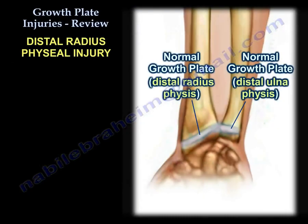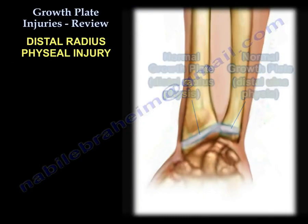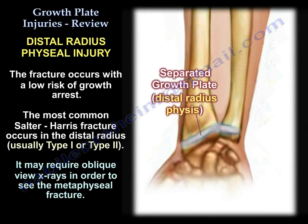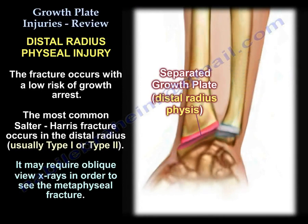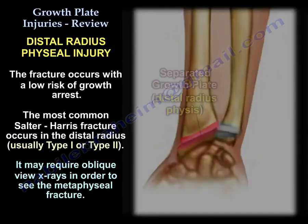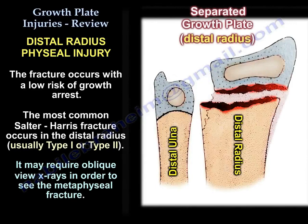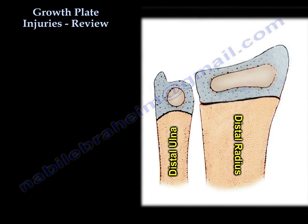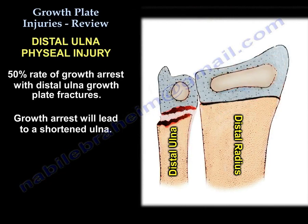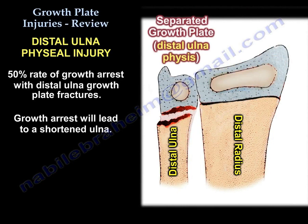Regarding the distal radius: the fracture occurs with a low risk of growth arrest. The most common Salter-Harris fractures at the distal radius are usually type 1 or type 2. Oblique views may be required to see the metaphysial fracture. If the fracture occurs in the distal ulna, there is a 50% rate of growth arrest, which will lead to a shortened ulna.